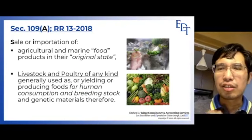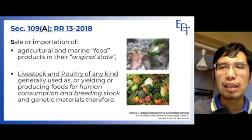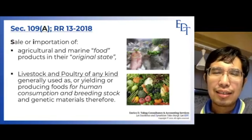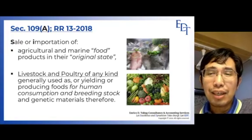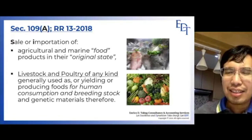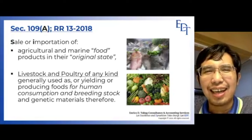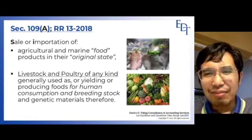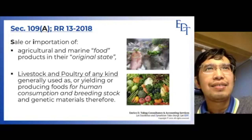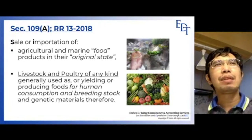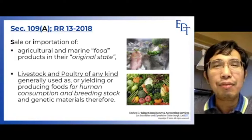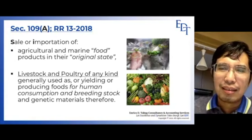Section 109A covers agricultural and marine food products. If your mother has a flower shop, that will not fall under this category because flowers are not food. Similarly, lumber — wood is not eaten. Bamboo used for home decoration in the kitchen or bathroom is not a food item. Those will be subject to VAT.